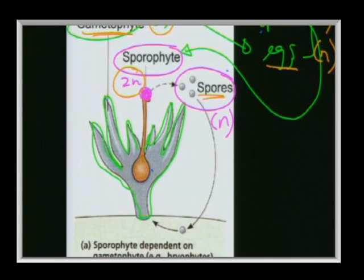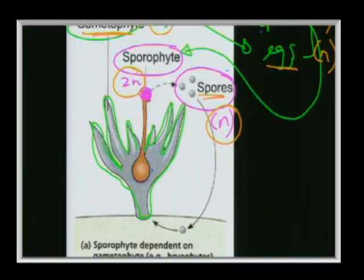The spores develop into an intermediate structure called the protonema, which then grows into the gametophyte structure again. You do not need to know the extreme detail, but what you do need to know is the alternation from the gametophyte generation to the sporophyte generation and how it gets back — that is the alternation of generations.